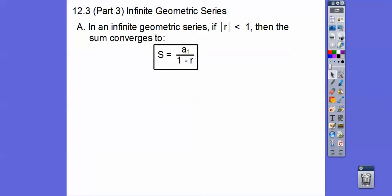It's that easy. So if the absolute value of r is not less than 1, which means greater than or equal to 1, then there is no sum. So let's say r is 2.